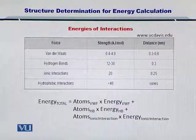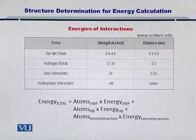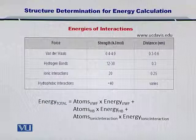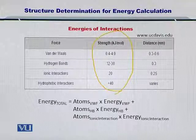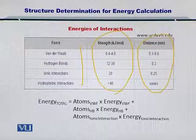In this table, you can see there are four types of interactions: Van der Waals forces, hydrogen bonds, ionic interactions, and hydrophobic interactions. And of course, once you know all of them and the energy given out as a result of the interaction, you also know the length of the bond between the atoms.